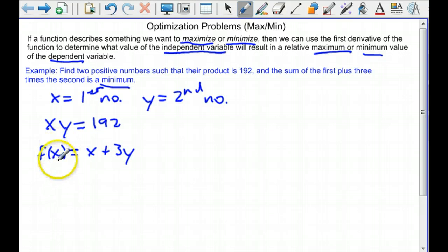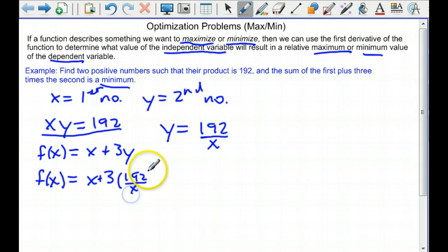This is supposed to be in terms of x, so I need to find a way to replace y with a function in terms of x. Up here, we get that y is 192 over x. So that means that our function in terms of x is x plus 3 times 192 over x, which is equal to x plus 576 x to the negative 1.